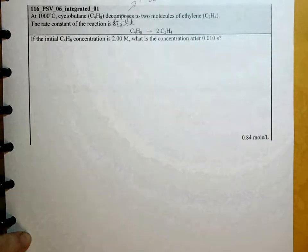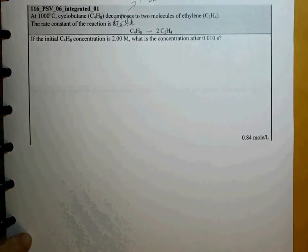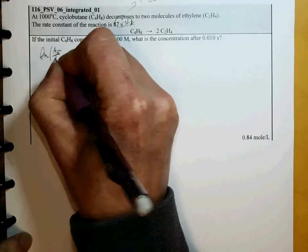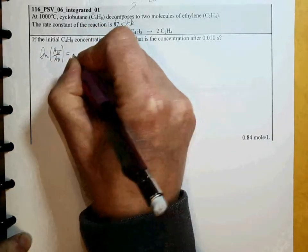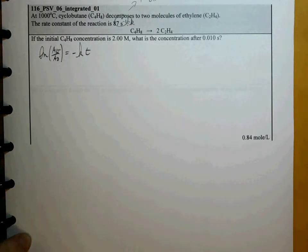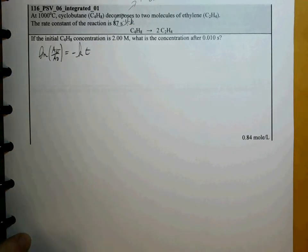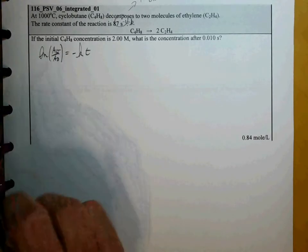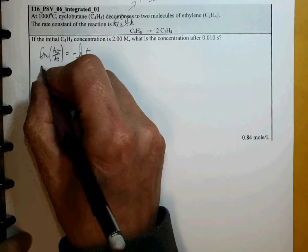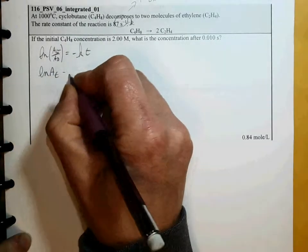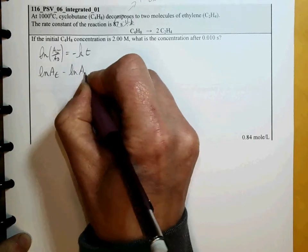So we're going to use the first order integrated rate law, and we're solving for the concentration at some given time T, so we're solving for A. We can expand this using properties of logs.